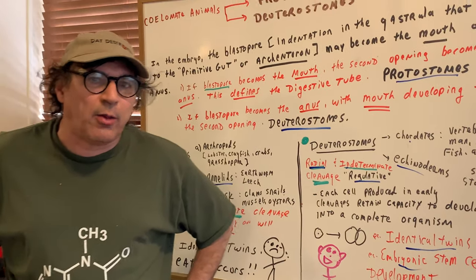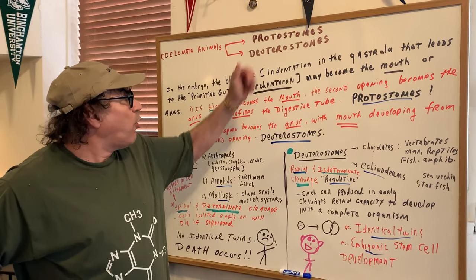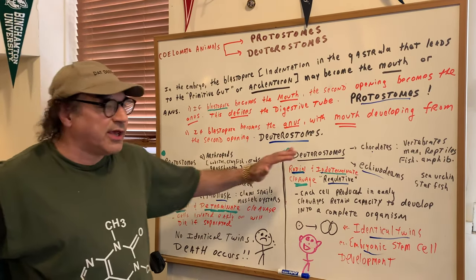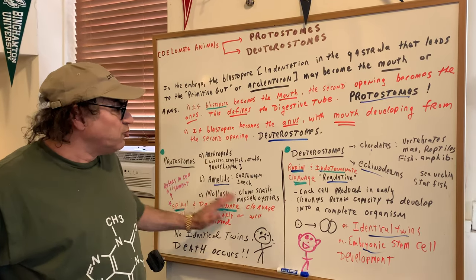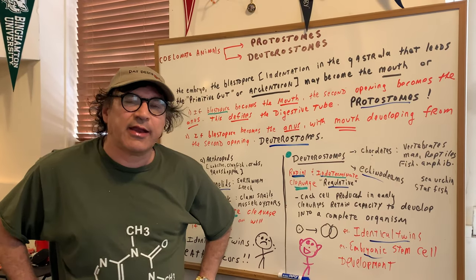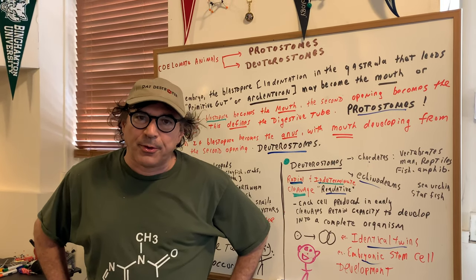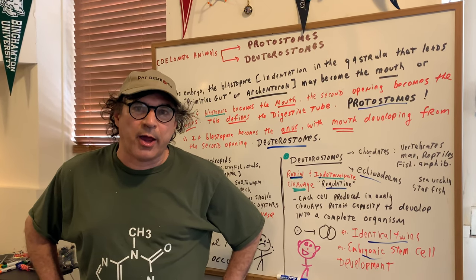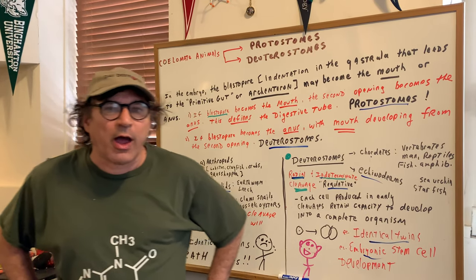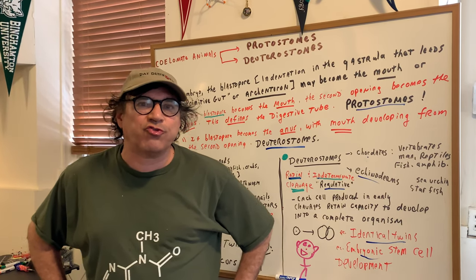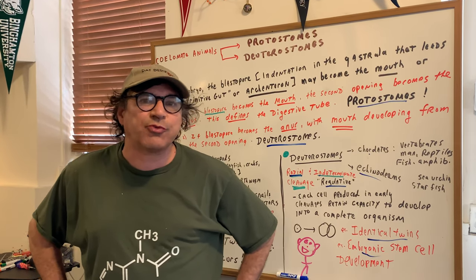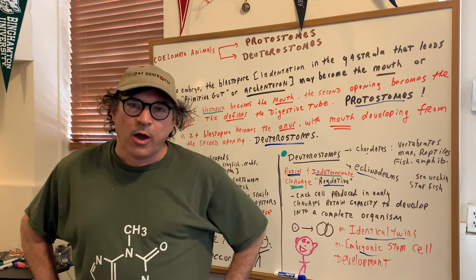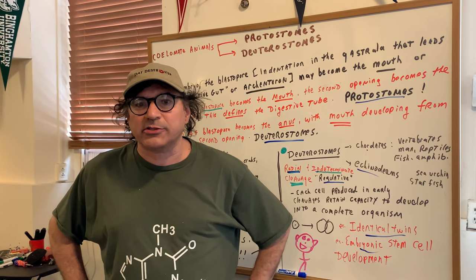I hope this helps with these two types of organisms — the protostomes and deuterostomes. Know the examples, know the types of cleavages, and I think you're set. I have some really good questions on this in the DAT Destroyer book and in my bio notes. Next time I'll be doing some work on the different germ layers — if you remember, during gastrulation we form the endoderm, mesoderm, and ectoderm. Goodbye and I'll see you next time.